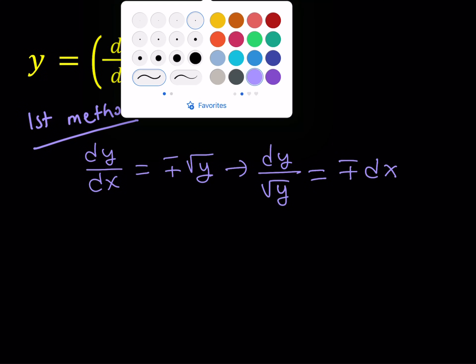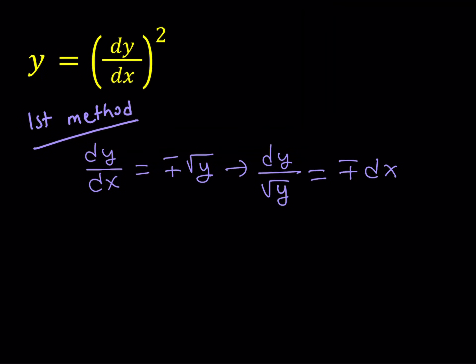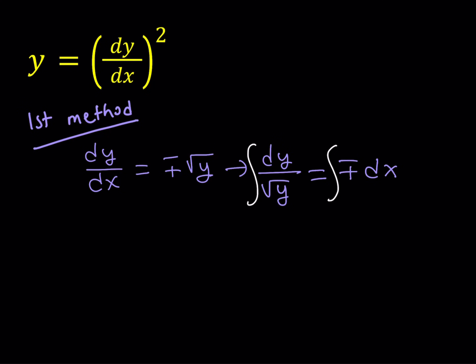The next step will be integrating both sides, which is going to give us x on the right-hand side and a function on the left-hand side. Let's integrate both sides. If you think about 1 over the square root of y — the derivative of square root of x can be written as 1 over 2 times the square root of x. On the left-hand side we are integrating with respect to y.